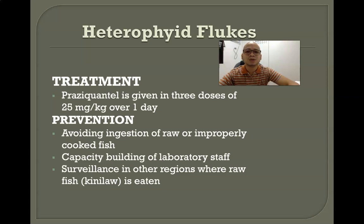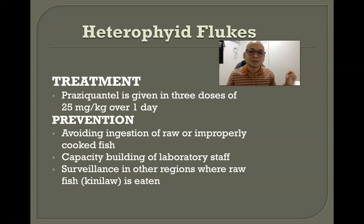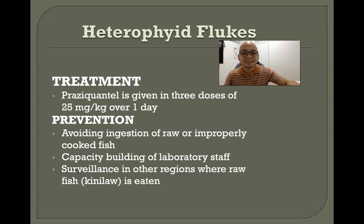Treatment is praziquantel given in three doses at 25 mg per kilogram body weight over one day. Prevention involves avoiding raw or improperly cooked fish. Capacity building of laboratory staff is important because the ova are too small and easily missed if unstained. Surveillance is needed in regions where kinilaw is eaten — kinilaw is prepared by adding vinegar, onion, garlic, and chili to raw fish without actual cooking, which does not kill the parasite.